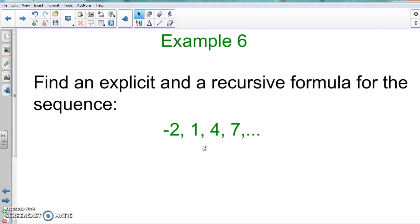And we just did recursive, so now we're going to do an example where we put all that together. For this one we're going to find the explicit and a recursive formula for this sequence: -2, 1, 4, 7...